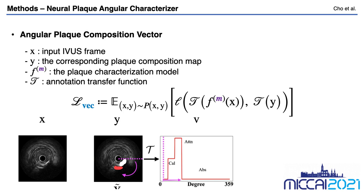We can convert the previous setting to an angular prediction system. There is an additional transfer function T, which generates the angular plaque composition vector V. Looking at the pink arrow in Y: from the position of zero degrees, the ground truth label Y starts with absence, then turns to a white calcium region, then to a red attenuation part, and returns to absence. This Y can be converted to angular plaque composition vector V by the transfer function T. We can estimate the performance of Fm for angle-wise classification by adding the transfer function T to the formula, and the loss function here is cross-entropy loss.